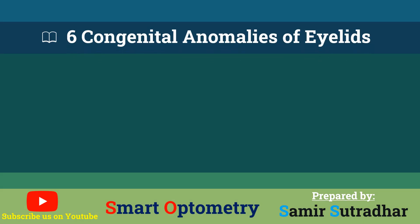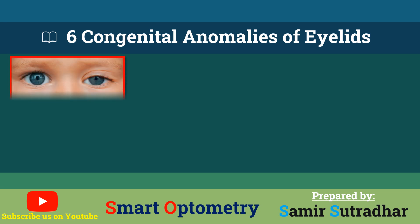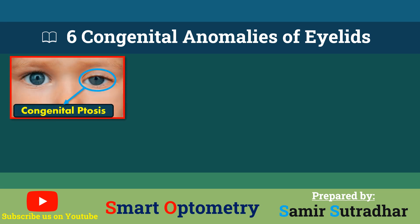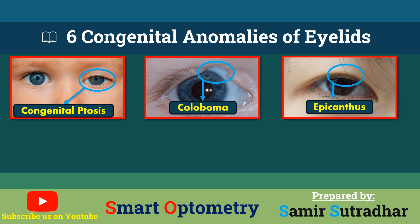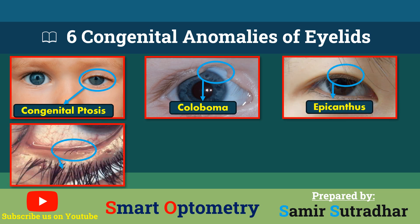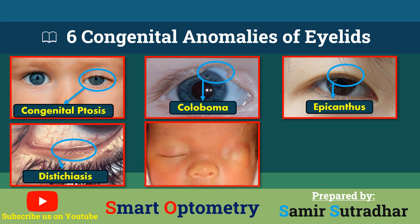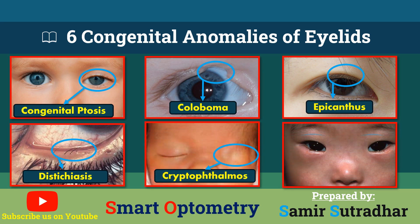Welcome to Smart Optometry. Today we'll explore 6 congenital anomalies of the eyelids: congenital ptosis, congenital coloboma, epicanthus, dystichiasis, cryptophthalmos, and microblepharon. These conditions affect the normal development of the eyelids and can impact vision, comfort, and appearance. Let's dive into each of these unique conditions.